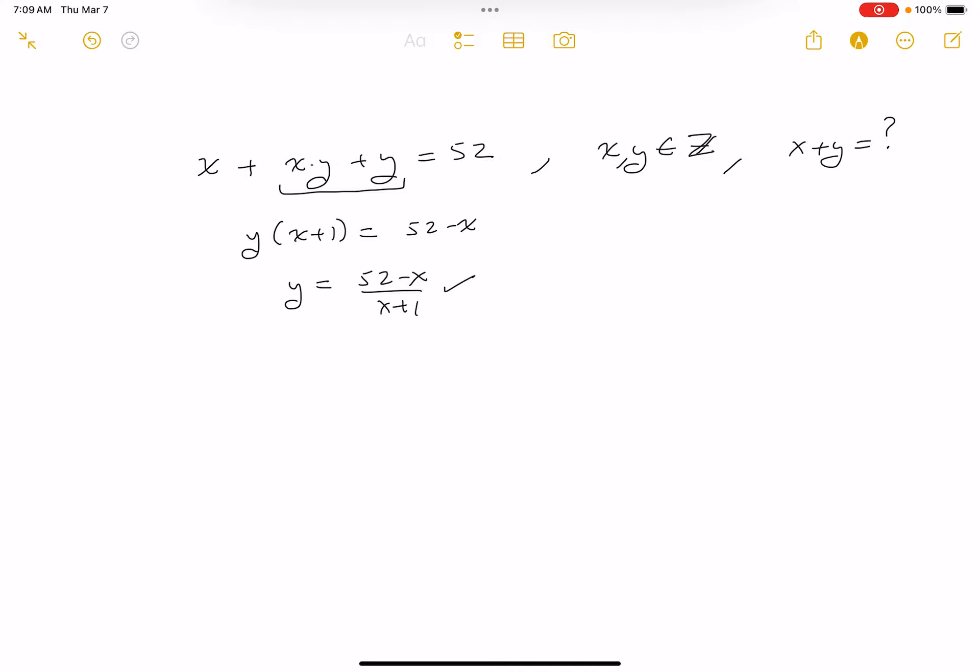Then I get (52 minus x) over (x plus 1). Now what I know is y is an integer, so I'm wondering what kind of numbers would make that an integer. The way I'd recommend doing that is rewriting as minus (x plus 52) over (x plus 1), so I can long divide.